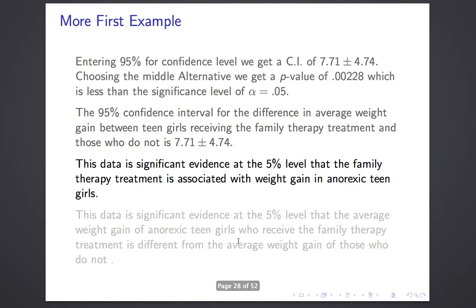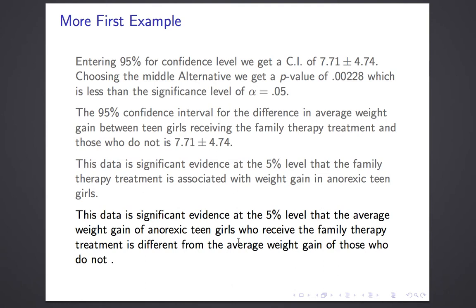The only null hypothesis is that the means are equal. You can take a different null hypothesis — means equal some fixed value — but we never will. We set our alternate hypothesis: our original question asked if there was a difference, not proposing a direction, so we use the two-sided alternative. We read off the p-value: 0.00228. Our 95% confidence interval is 7.71 plus or minus 4.74. Since the p-value 0.00228 is less than the significance level of 5%, this data is significant evidence at the 5% level that family therapy treatment is associated with weight gain in anorexic teen girls, or that the average weight gain of those who receive the family therapy treatment is different from the average weight gain of those who do not.